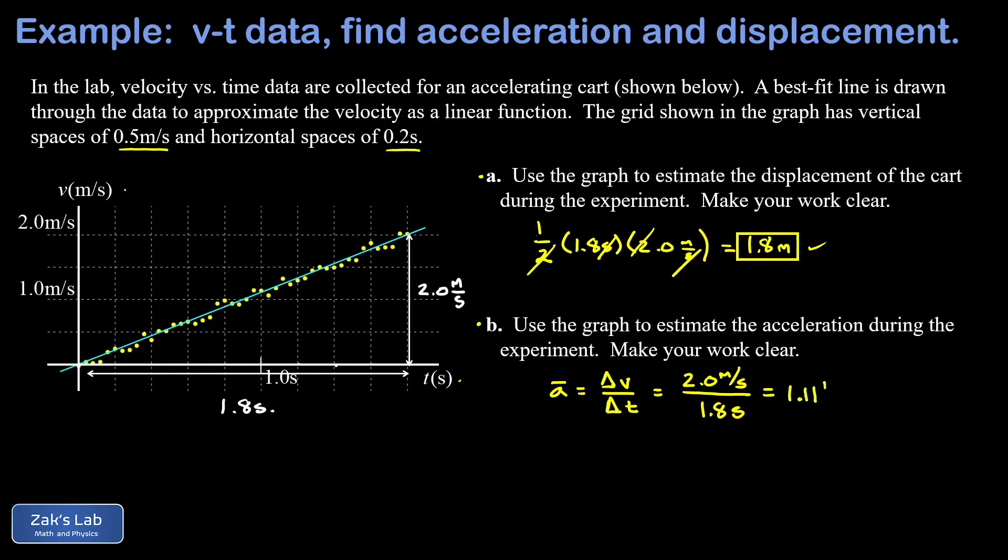When we take 2.0 divided by 1.8, we'll just keep three sig figs here, I get 1.11. And then look at the units - meters per second divided by seconds gives me meters per second squared.